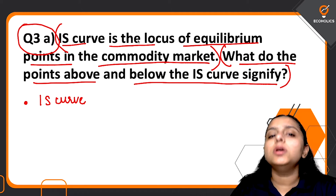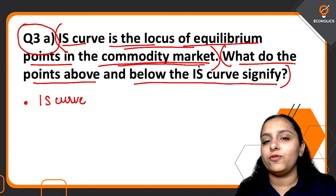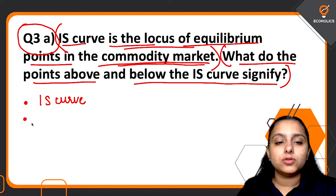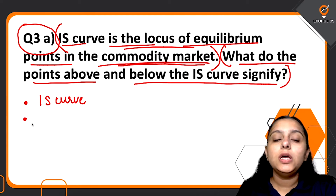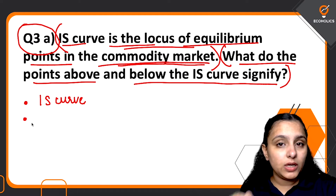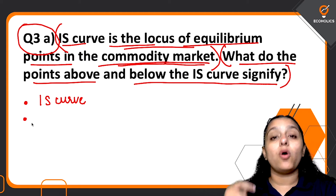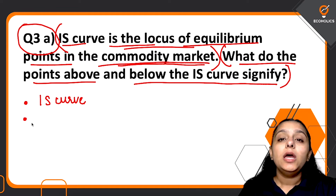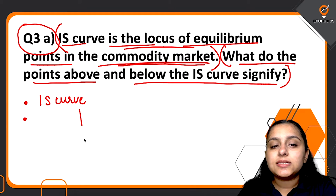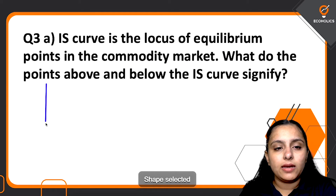So how do you start your answer? By writing a good introduction. You will first talk about the IS curve — write its definition using different words from the ones already given in the question. You can say that the IS curve is the schedule of combinations of income and rate of interest which bring equilibrium in the goods market or commodity market.